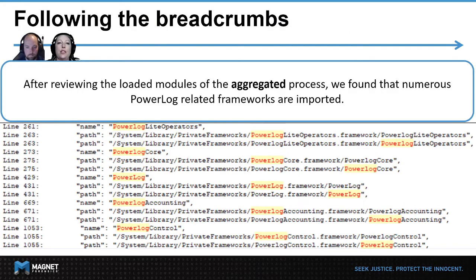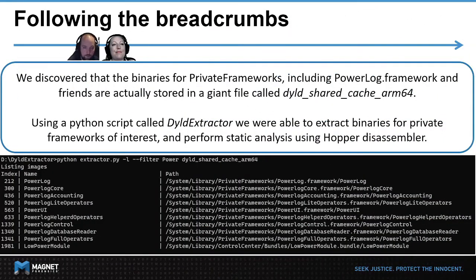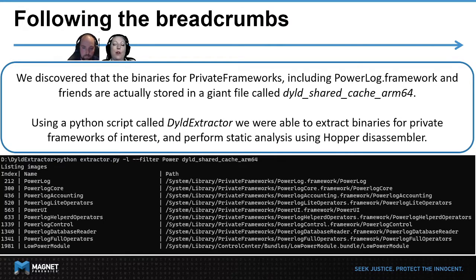After reviewing the loaded modules of the AggregateD process, we found that numerous Powerlog-related frameworks are imported. As you can see here, the full paths are listed. However, when we visited these paths via SSH to obtain them for static analysis, they were not present. We eventually discovered that binaries for private frameworks such as Powerlog.framework and all of its friends are actually stored together in one giant file known as DYLDSharedCacheArm64. If you've ever done iOS extractions, you have probably seen this file as one of the larger files on an extraction, coming in at around two gigabytes in size.